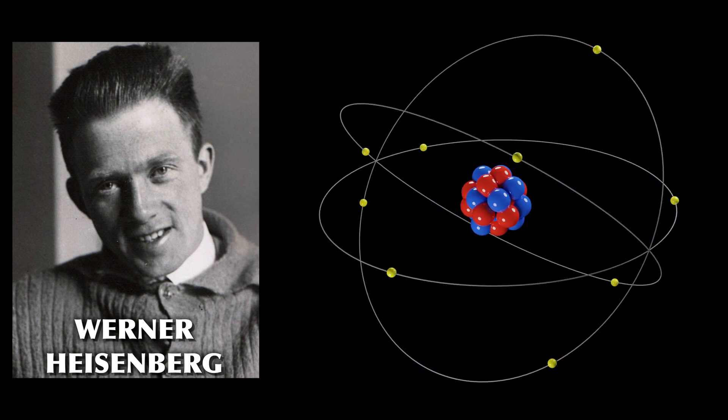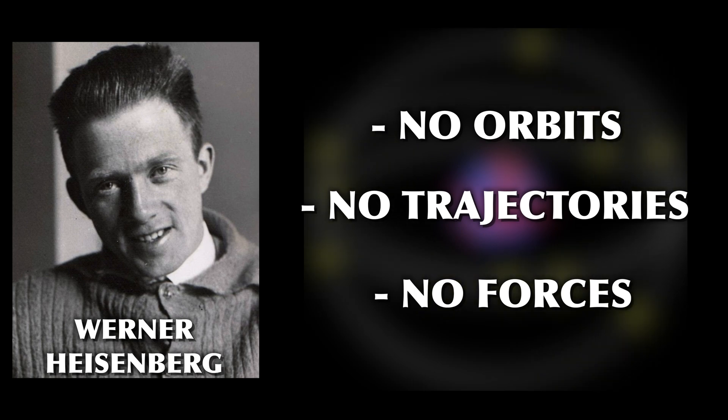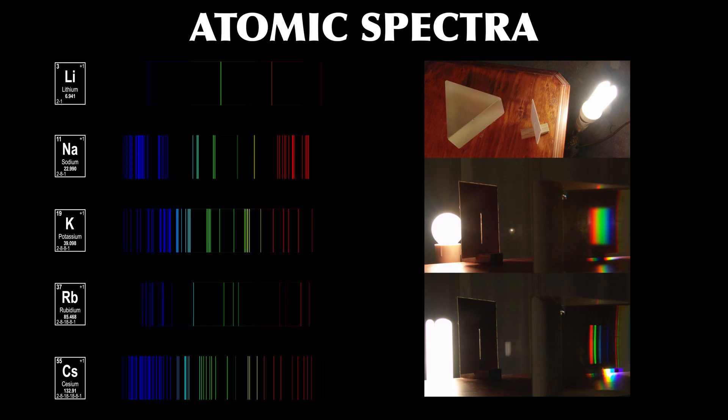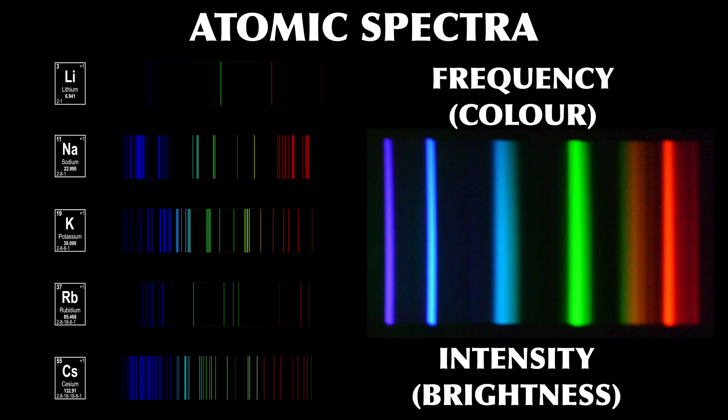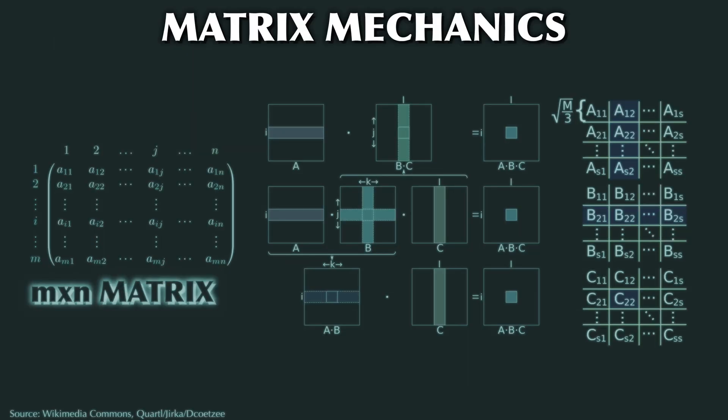In 1925, young Werner Heisenberg was the first to breach the door into atomic physics. His approach had been to discard the entire notion of orbiting electrons and trying to describe their trajectories and the forces holding them in orbit. Rather, he decided to only use what could be directly observed — in the case of atoms, the light emitted by atoms, its frequencies and intensities. Starting from scratch, he came up with a scheme of multiplying tables of data, which was subsequently refined into matrix mechanics, the first formulation of quantum mechanics. It was highly abstract though and not immediately successful.